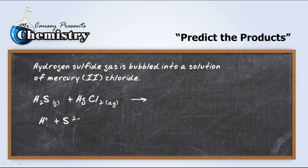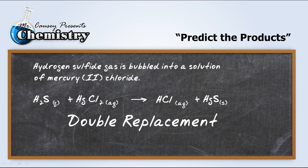There's our hydrogen and our sulfur and our mercury and our chloride. The ions will match up and we'll get hydrogen chloride and mercury 2 sulfide. That's a double replacement reaction.